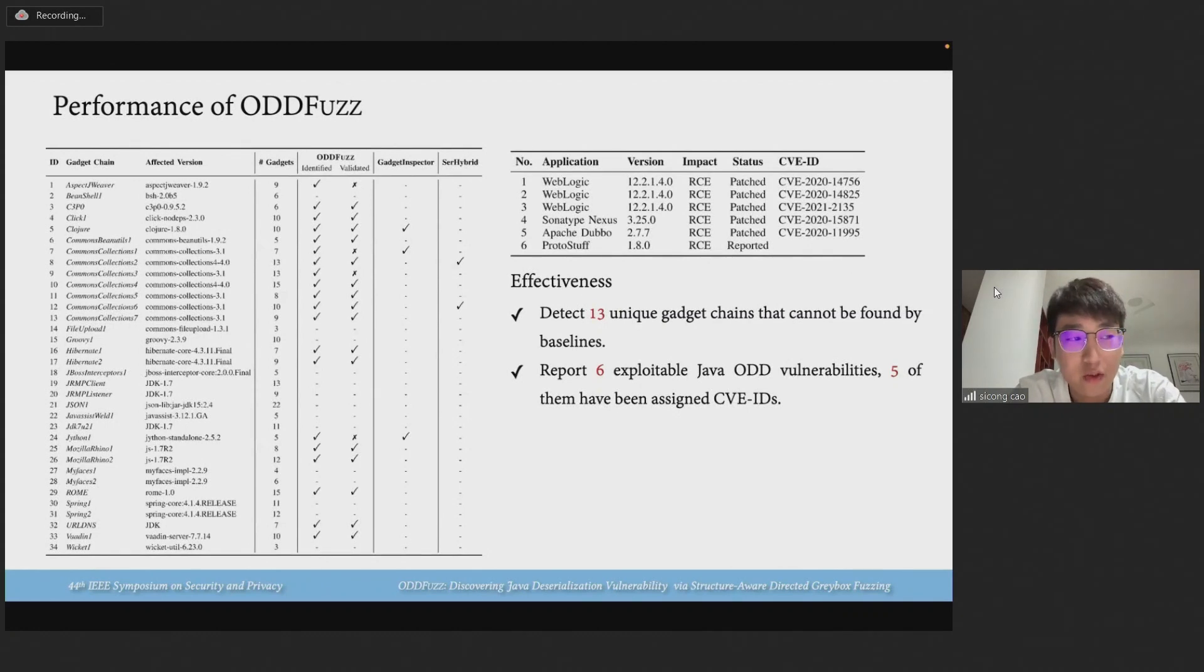Amongst these chains, we find that AuditFast can detect certain unique gadget chains that cannot be found by baselines. When applied to real-world applications, our approach successfully detects six previously unknown Java audit vulnerabilities. Five of them have been assigned CVE IDs.